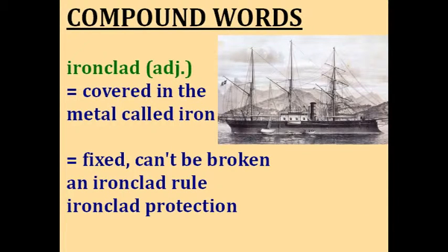Ironclad. Ironclad literally means to be covered in the metal called iron — for example, a battleship like you can see in the picture; the iron provides protection. But the word ironclad is often used metaphorically, for example, an ironclad rule or ironclad protection. It means something that's fixed and can't be broken. An ironclad rule is one you can't break, and ironclad protection is protection that can't be penetrated.